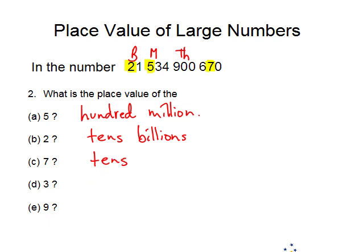The 3 is in this position. Within that set of 3 digits it's in the tens position, so this is 3 tens million, or 30 million. And the 9 is here — within its set of 3 digits it's in the hundreds place, and those digits are all about thousands, so the 9 means 900,000.